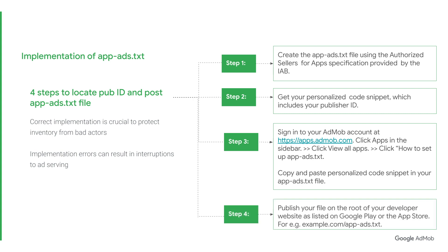Finally, publish your file on the root of your developer website as listed on Google Play or the App Store — for example, example.com/Apex.txt. If you need more detailed information, please visit the AdMob Help Center. You can find the links to relevant Help Center articles in the description box below.